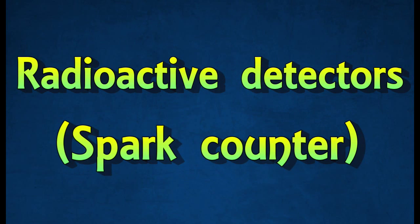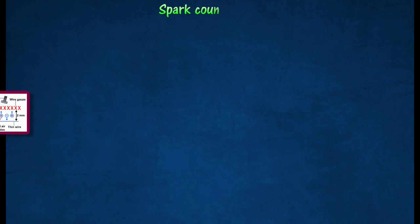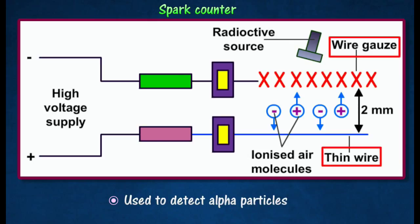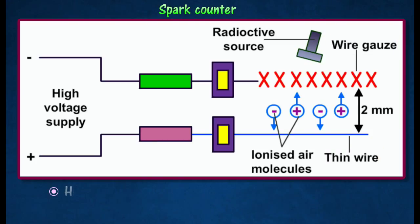A spark counter can be used to detect alpha particles. It consists of a wire gauze with a fine wire mounted two millimeters below it. A high voltage is applied between the gauze and the wire.